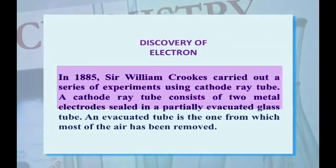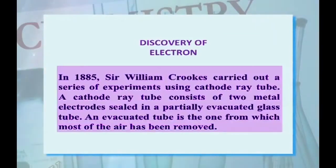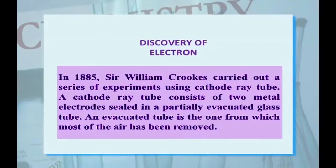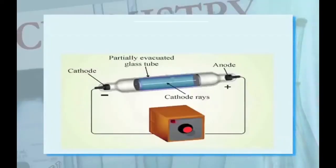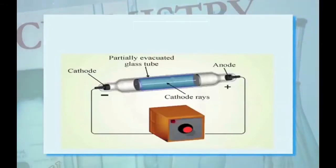A cathode ray tube consists of two metal electrodes sealed in a partially evacuated glass tube — an evacuated tube is one from which most of the air has been removed. The negatively charged electrode is called the cathode, whereas the positively charged electrode is called the anode. These electrodes are connected to a high voltage source. This overall arrangement produces negatively charged particles, which are later called electrons.